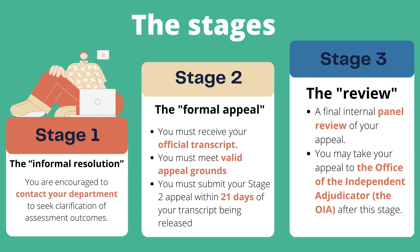If you are unhappy with the outcome, you may go to Stage 3 to request a final internal panel review of your appeal. At the end of Stage 3, if you are still unhappy with the college's decision, you may be able to take your appeal to the higher education ombudsman, the Office of the Independent Adjudicator, known as the OIA, for an independent review.